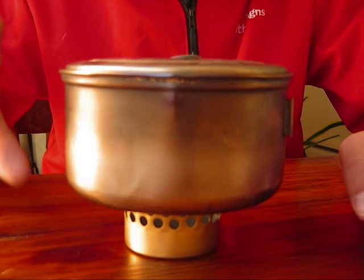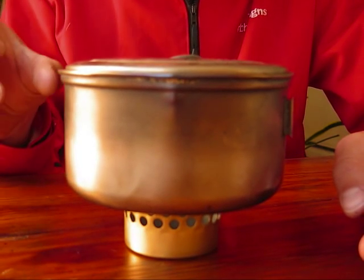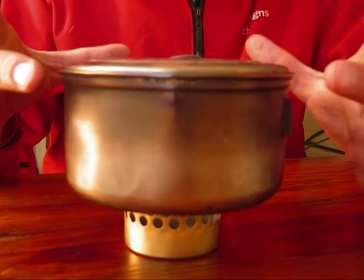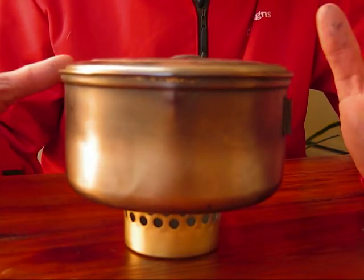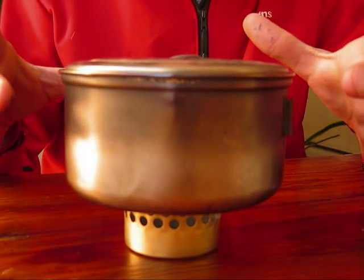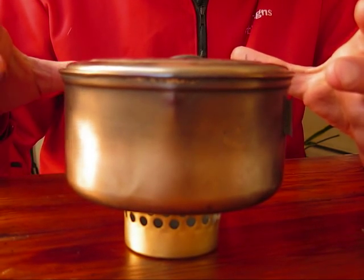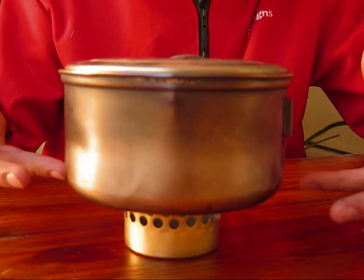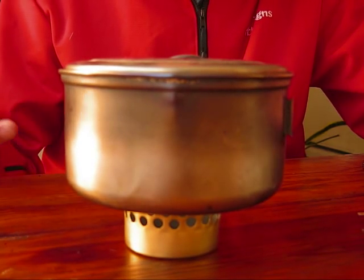My windscreen sits about this high and I try to keep it about a half an inch from the edge of the pot and that makes sure that the wind is not blowing heat away, but also that as much of the fuel is being used to transfer heat into the pot and warm up whatever I have inside.